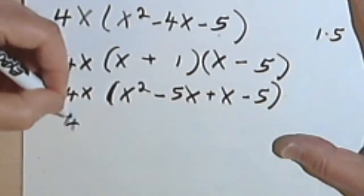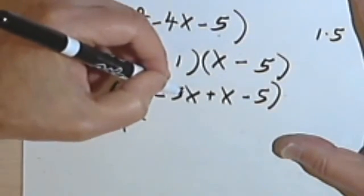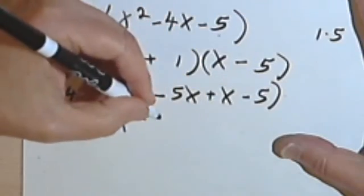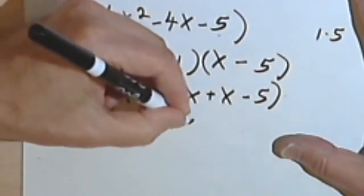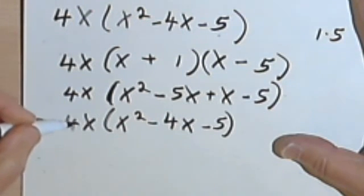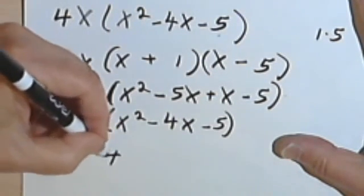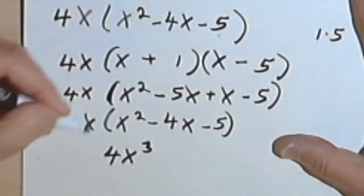I want to combine these two terms. So I'll have 4x times x squared, negative 5x plus 1x is just negative 4x, minus 5. And distributing this 4x, I have 4x times x squared is 4x to the third.